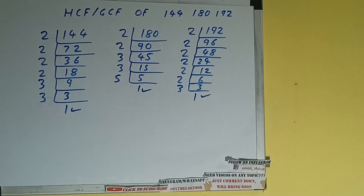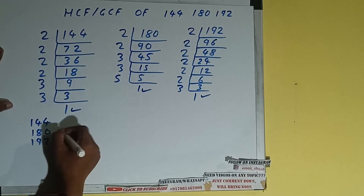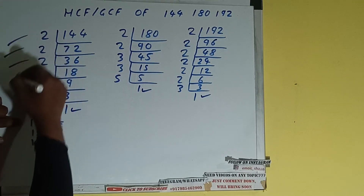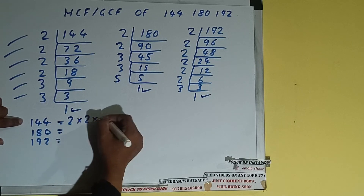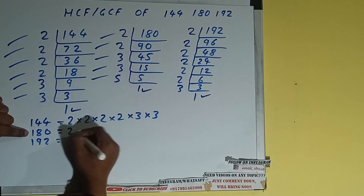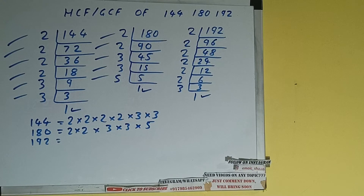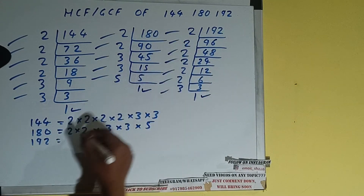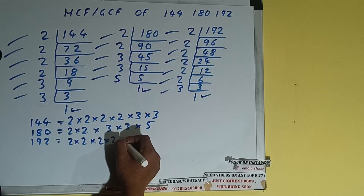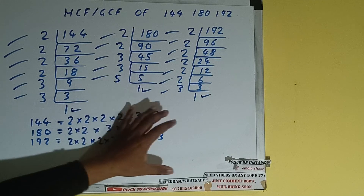Now we need to write down each number with their respective prime factors. So for 144 we got: 2 × 2 × 2 × 2 × 3 × 3. Be very cautious because if you miss out even one prime factor, the whole answer can go wrong. For 180 we'll write: 2 × 2 × 3 × 3 × 5. For 192 we'll write: 2 × 2 × 2 × 2 × 2 × 2 × 3.